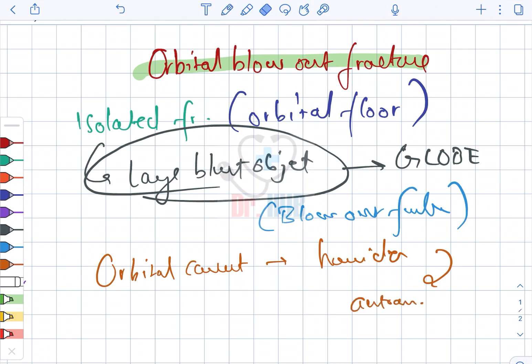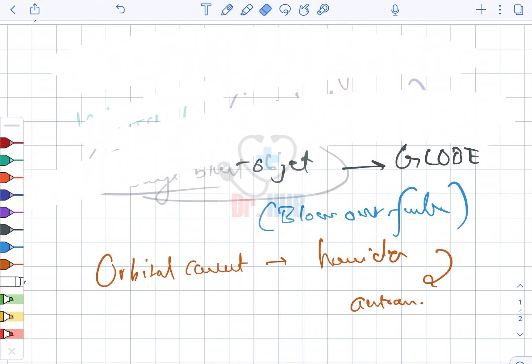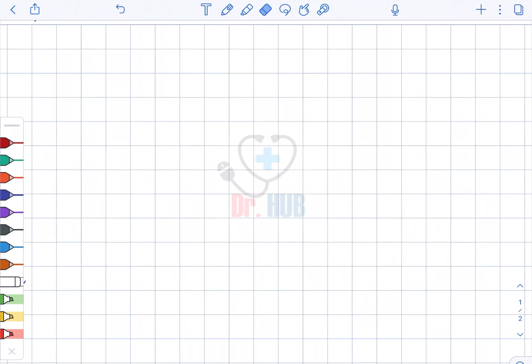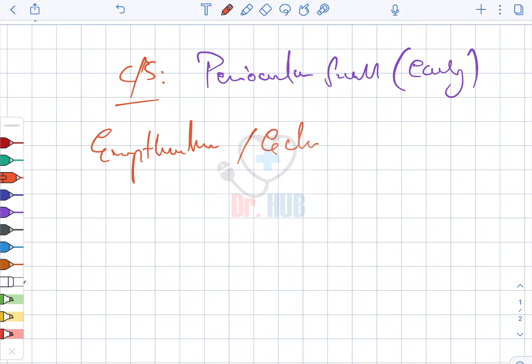In the clinical signs, there is periocular swelling, which is the early sign. Then there is also enophthalmos, ecchymosis, as well as subconjunctival hemorrhage being the latest stages.